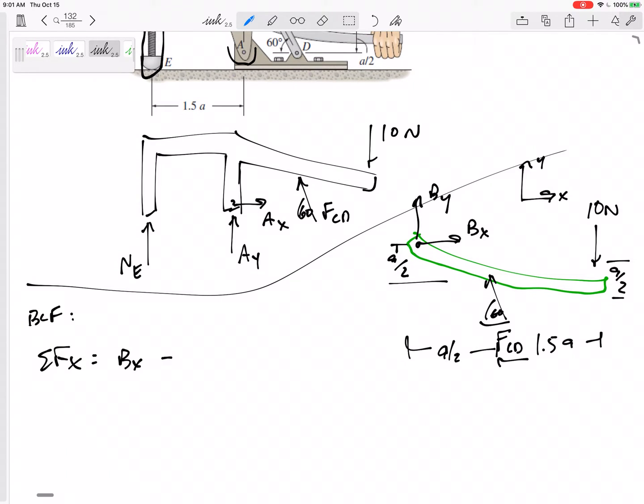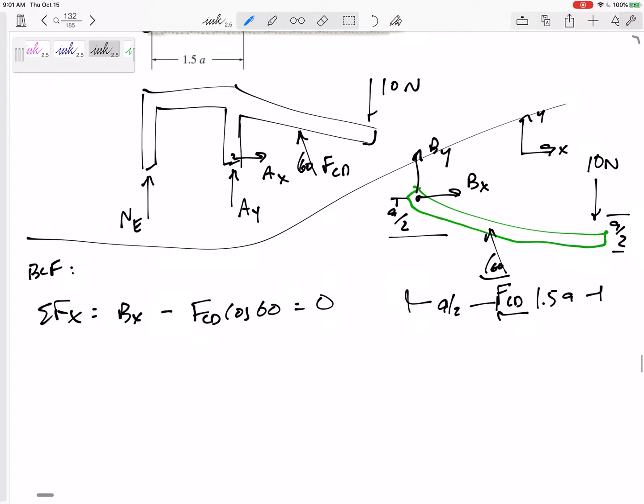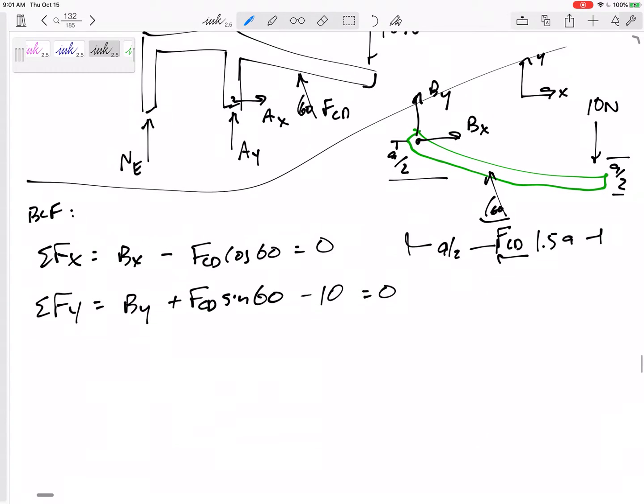And I can sum the forces in the X direction. I've got BX minus, let's see, this cosine 60 component would be in the X direction, and that's it. Those are the only forces in the X direction, so set those equal to zero. Two unknowns, so let me jump to my next equation. Sum the forces in Y. BY, I drew it up. FCD sine 60, I drew it up, and then down 10 equals zero still. Two unknowns. Probably should have started with summing the moments.